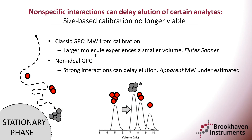The usefulness of this experiment is often limited by the requirement for upfront calibration of GPC columns with standards of known molecular weight. It is not always possible to obtain a set of molecular weight standards with the same chemistry as the unknown sample. Depending on the exact choice of solvent, it is possible that certain materials might adhere to the stationary phase during elution, delaying their elution, and thus yielding erroneous molecular weight estimates.